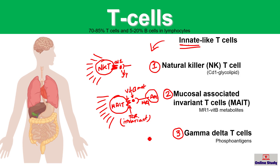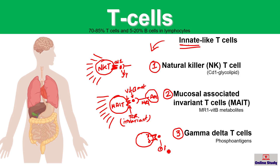Gamma delta T cells are different from normal T cells in that they produce the gamma and delta chains of the TCR instead of the usual alpha and beta chains. They can recognize phosphoantigens from pathogens. Thank you for watching — please thumbs up and let me know which topic I can cover in the next video.